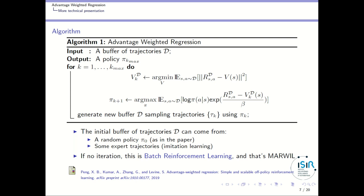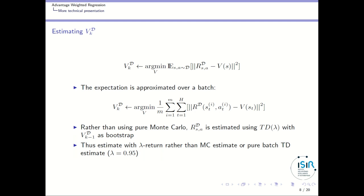This is very similar to policy gradient techniques, where we are also looking for the max over policies of the log probability of the policy times a return. But what is new here is using this exponentiation and the temperature parameter. From that policy you generate a new buffer of data with trajectories obtained by that policy, then loop again. If we just do one iteration of the loop, this corresponds to batch reinforcement learning, which is the algorithm called MARWAIL.